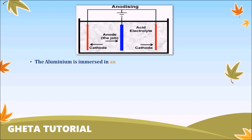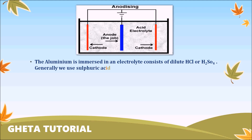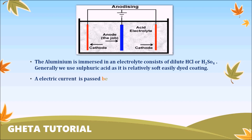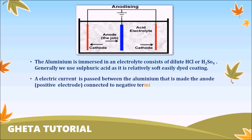During this anodizing process, we have to make the aluminum the anode — that is, the aluminum is the positive electrode. The aluminum is now immersed in an electrolyte consisting of dilute HCl or dilute H2SO4, which is sulfuric acid.